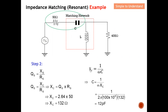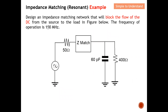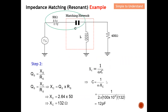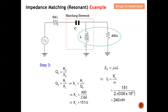I can't stop at the reactance value — the objective is to find the actual capacitor value. The reactance of a capacitor equals 1 over (ω × C), where ω = 2πf. Rearranging to find C: C = 1 / (ω × Xc). The frequency given is 100 MHz, so plugging in: C = 1 / (2π × 100×10⁶ × 132) = 12 picofarads. So the series capacitor is 12 picofarads.